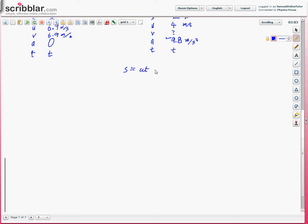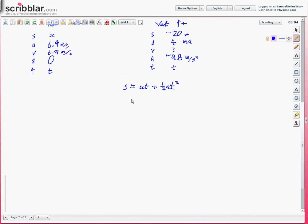So, ut plus half at squared. Then we feed in the numbers that we know. s is minus 20 equals 4, u is 4, 4t minus because a is negative, half a is 4.9 t squared.